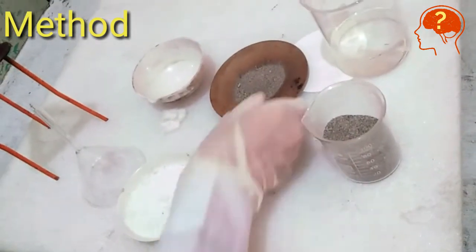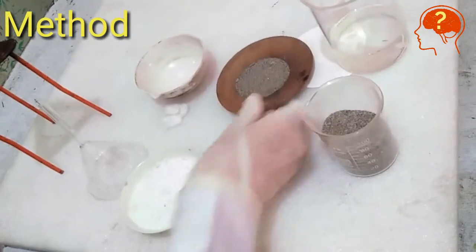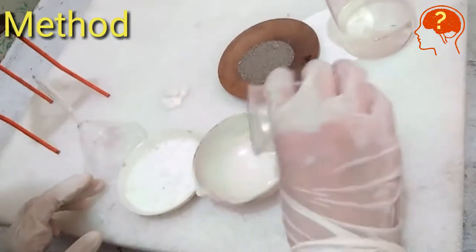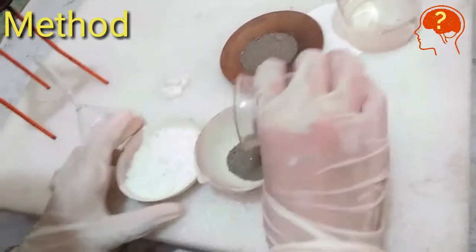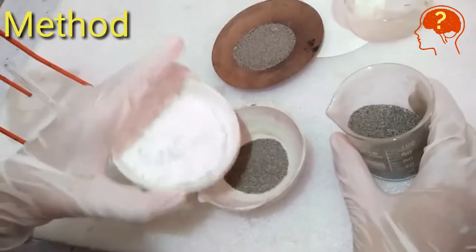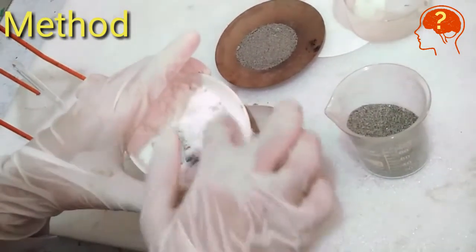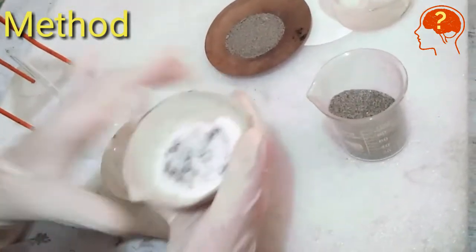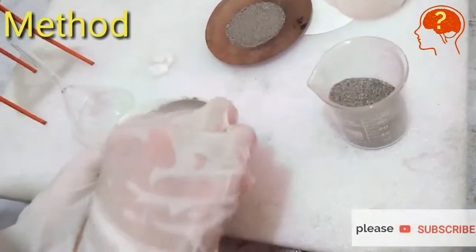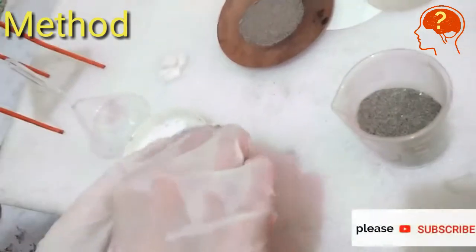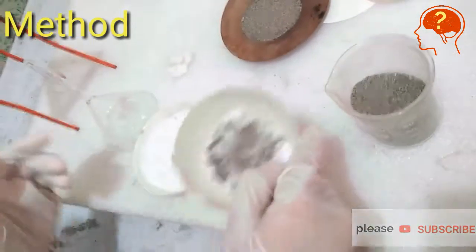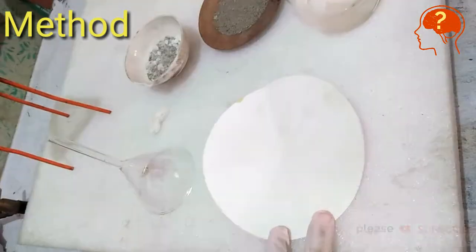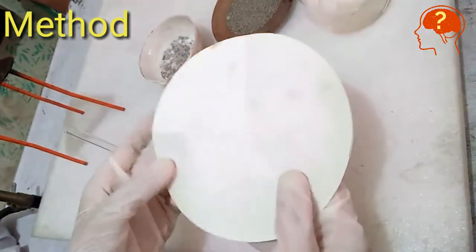Now she is adding sand in sand bath. Take china dish and make the mixture of sand and naphthalene. Add a few grams of sand and a few grams of naphthalene to make a mixture. Now she is going to make a filter paper cone.